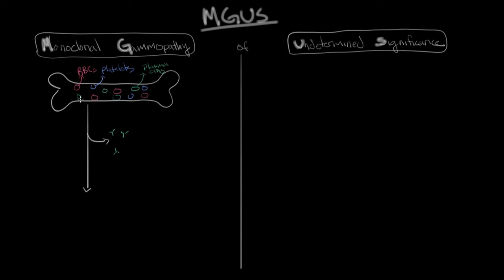What happens in MGUS, as well as multiple myeloma, is that for some unknown reason, certain individuals have a monoclonal expansion of plasma cells. Let's pretend we have a plasma cell here, and there's a problem with one of these plasma cell precursors in the bone marrow. There's a problem with this one cell — the other plasma cell precursor cells are normal. But when the cell replicates, it makes more dysfunctional cells, which then replicate and make more dysfunctional cells. So this one dysfunctional cell can produce, over time, many dysfunctional cells.